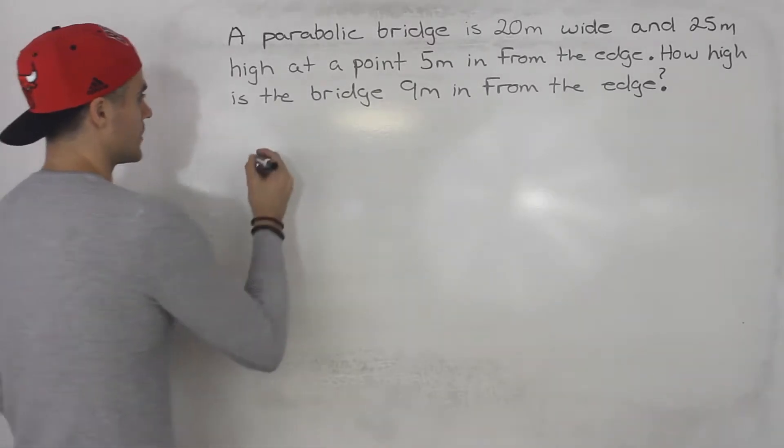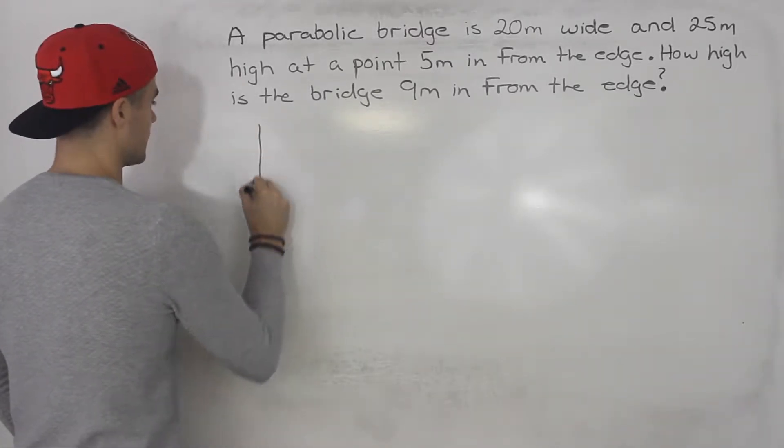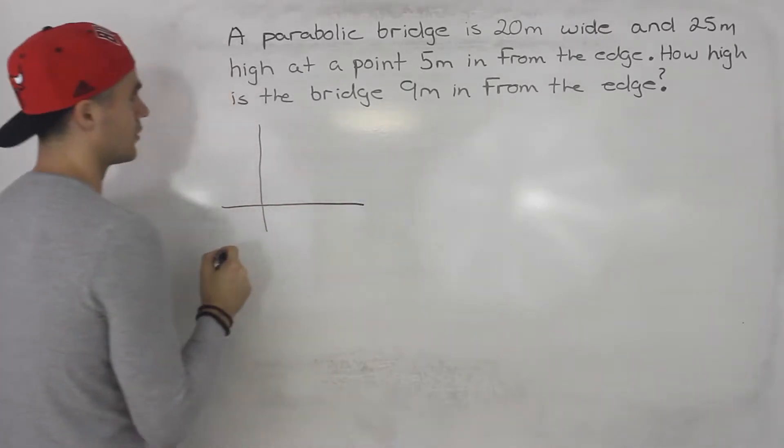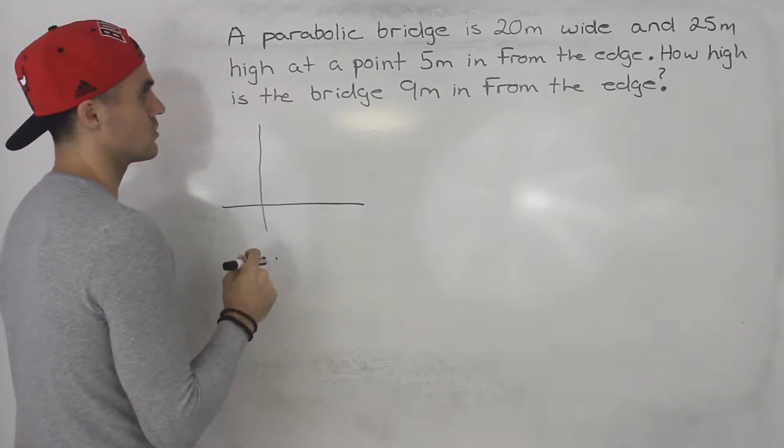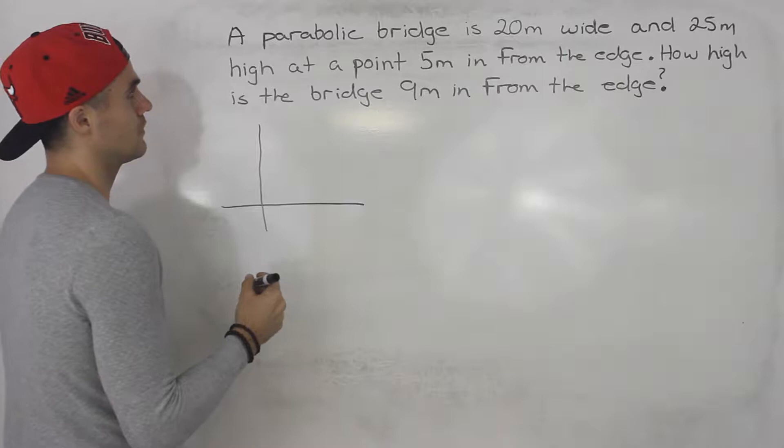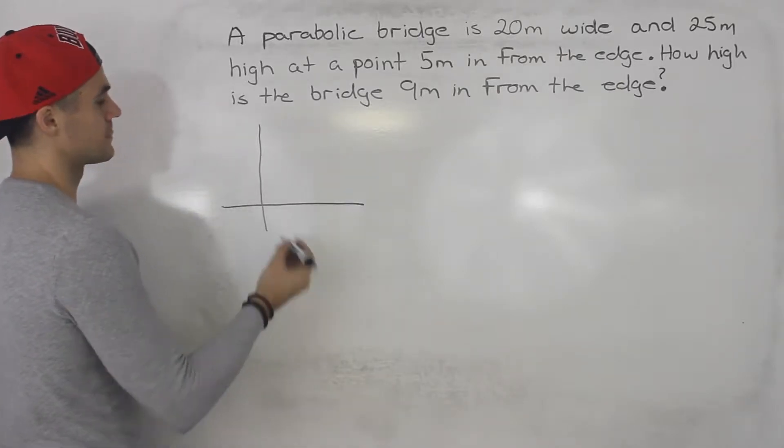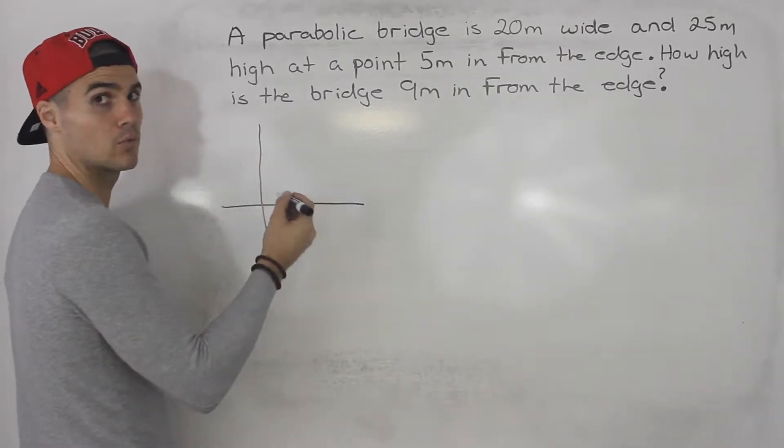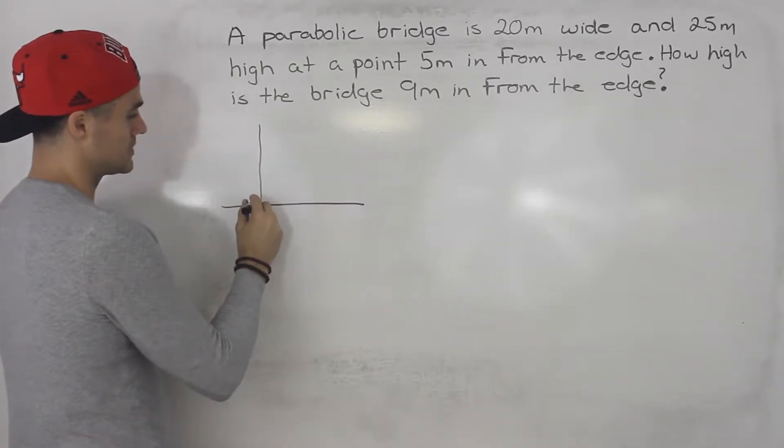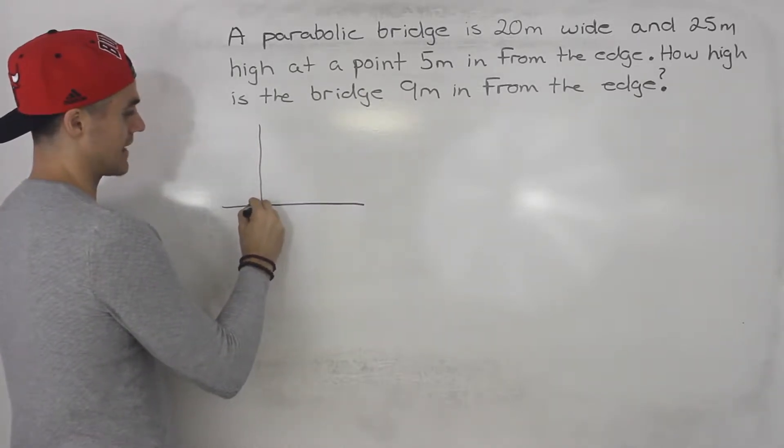So with this type of question, first thing you want to do is draw a diagram. And there's actually multiple diagrams you can make with this. I'm going to show you the one that I like to make that I find easiest. So whenever I'm dealing with a parabolic bridge or any sort of parabola word problem like a parabolic tunnel maybe, I always like to put one of the edges at the origin.